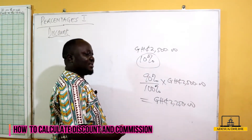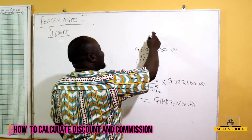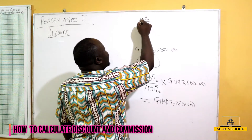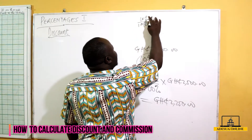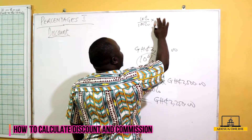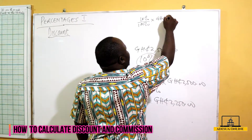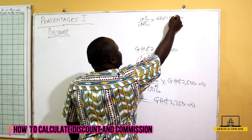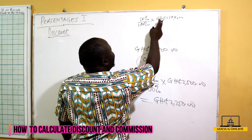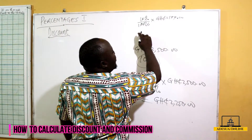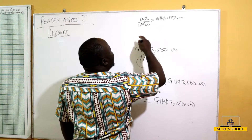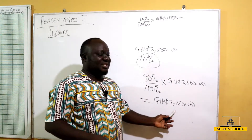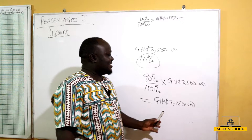Another way of doing this is just calculating 10% of 2500 directly. So 10 over 100 times 2500: the zeros cancel, giving us 10 times 25, which is 250. Then we take 250 away from 2500, and we get 2250 Ghana cedis — the same amount. So that is discount.